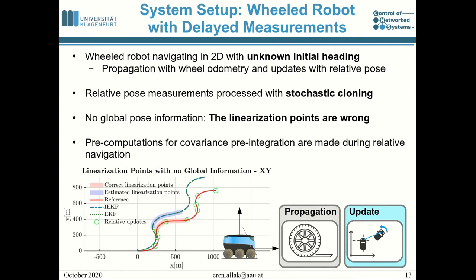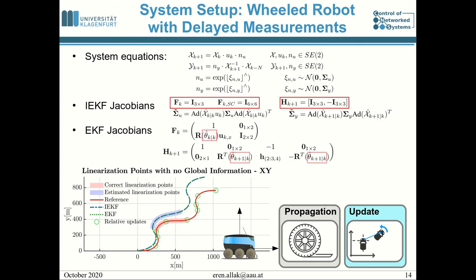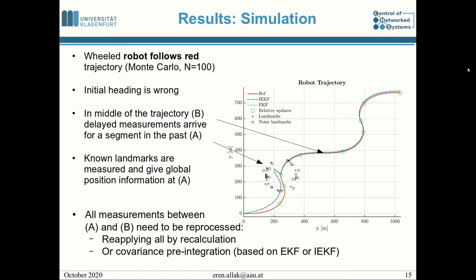The system we are looking at involves ground robots with unknown initial heading navigating in 2D. We propagate with wheel odometry and update with relative poses, using stochastic cloning. During this period we don't have global pose information, meaning the linearization points are wrong, as shown in the bottom image. With the wrong initial heading we build pre-computations on wrong state estimates. However, this does not affect the IEKF-based covariance pre-integration, because the Jacobians F and H are state-independent, whereas for the EKF-based case F and H have state dependency.